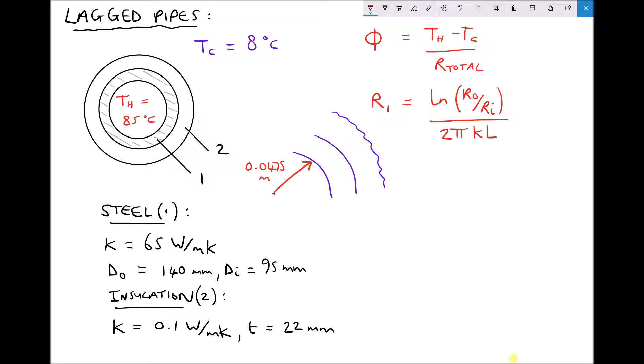I can do the same for the outside radius here. The outside radius is half of the outside diameter. So we have an outside diameter of 140mm. Therefore the outside radius is 70mm or 0.07m.